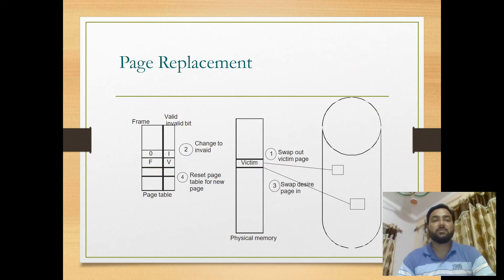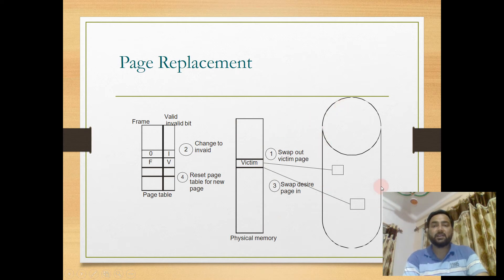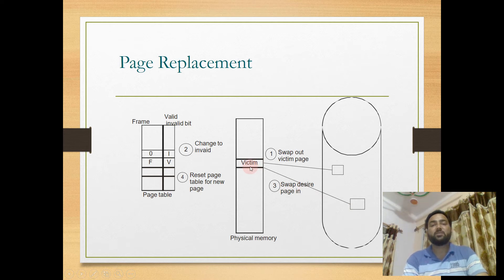This is a graphical overview of the page replacement technique. Physical memory and secondary storage are shown. The frame identified as the victim is swapped out to secondary storage, and the desired page is swapped into physical memory at the location of the victim frame. The page table entry is changed to invalid, then reset for the new page, and the process continues.